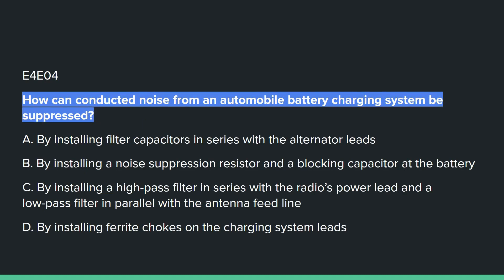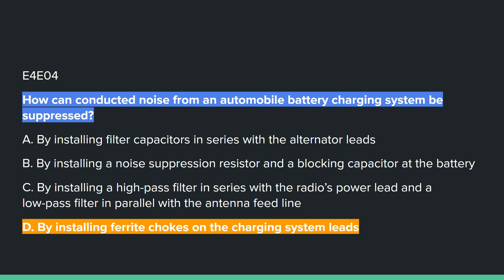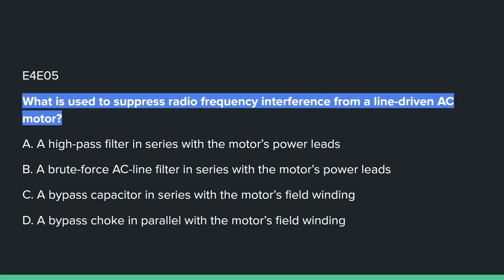E4E04: How can conducted noise from an automobile battery charging system be suppressed? Answer D: by installing ferrite chokes on the charging system leads.